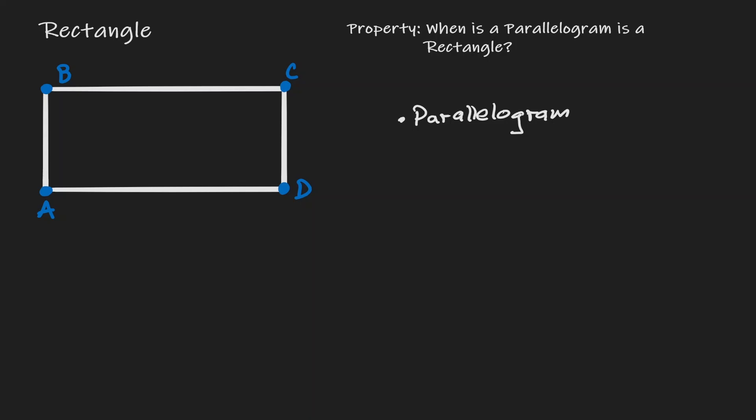If the left-hand side is a parallelogram, we know certain things. We know that opposite sides are congruent to each other — that's a property of a parallelogram. And in addition, we know that opposite sides are also parallel to each other.